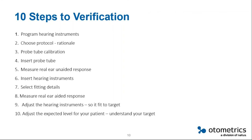Then we need to choose a protocol — finding out the goal and the rationale we are going to use for this fitting. You can use NAL or DSL, or you can also use targets from the hearing aid manufacturers. Then you need to do a probe calibration, and then insert the probe tube. That's the part people are a little bit afraid of. Then we measure the real ear unaided response. Together, inserting the probe tube and measuring the REUR will give us the safety that we are doing a good job by placing the probe.